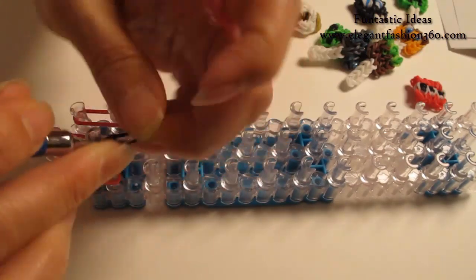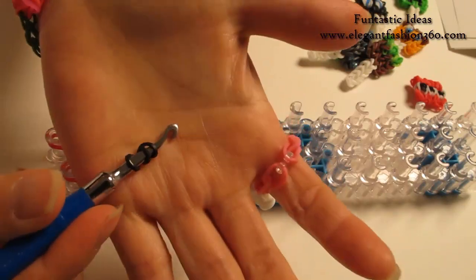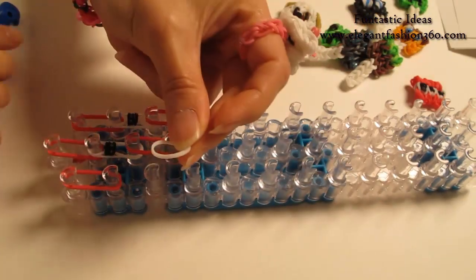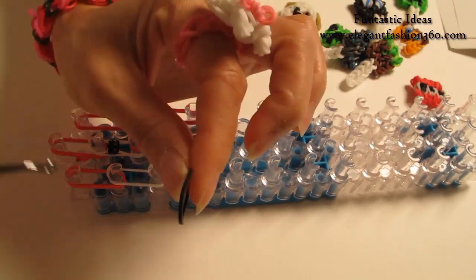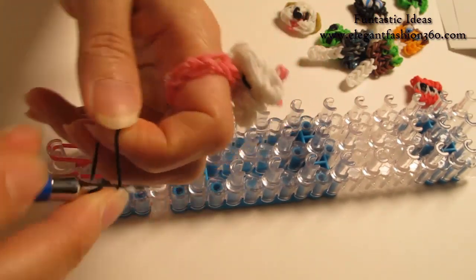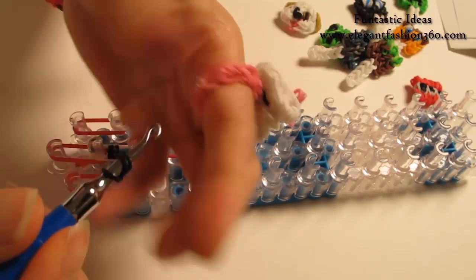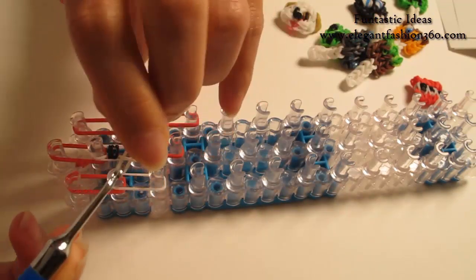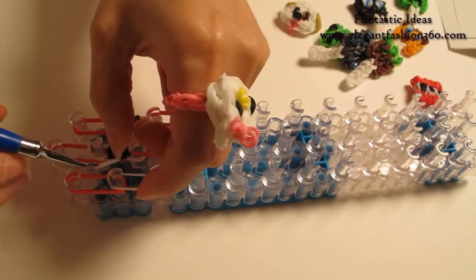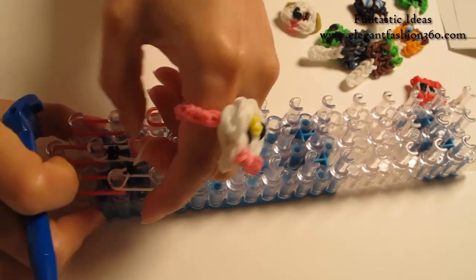Take 1 black band, twist 2 times, you'll see 3 rings here. Take 1 white band and take 1 black band, twist 2 times, you'll see 3 rings here. Take another white band, bring it in here, and place right here on top of it.